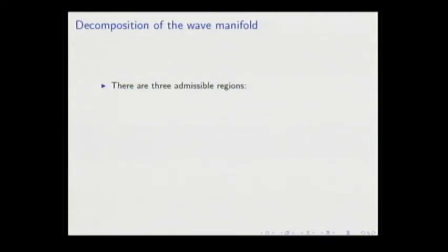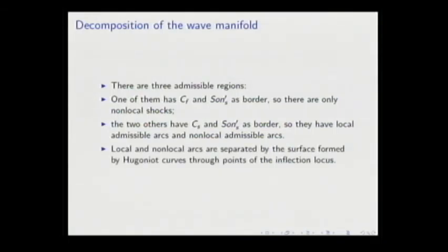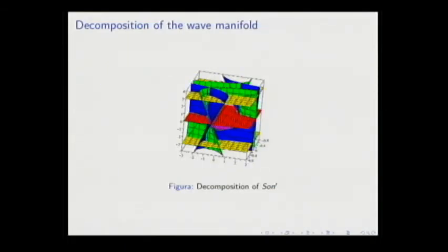There are three admissible regions. One of them has Cf and sonic prime S as border, so there are only non-local shocks. The other two have CS and sonic prime S as border, so they have both local admissible arcs and non-local admissible arcs.